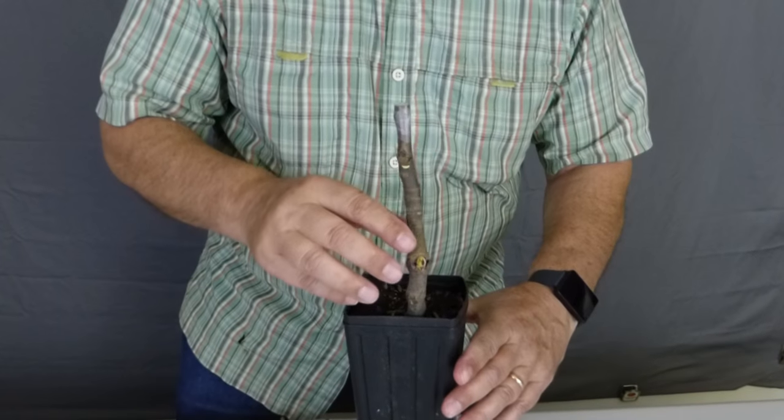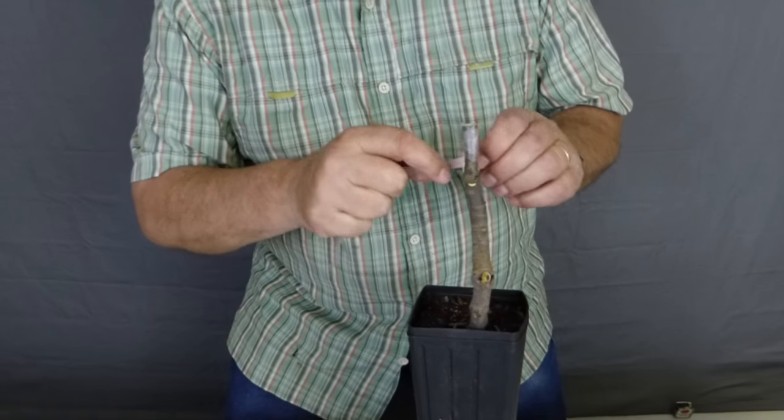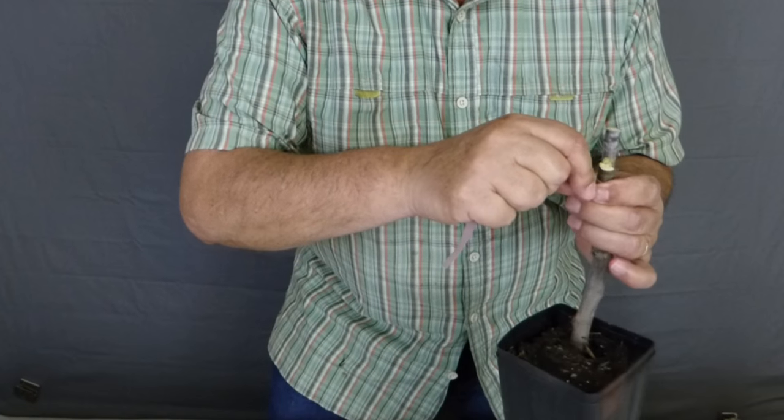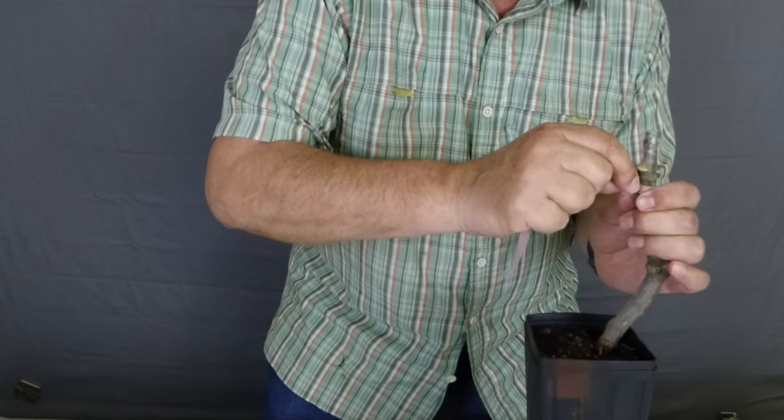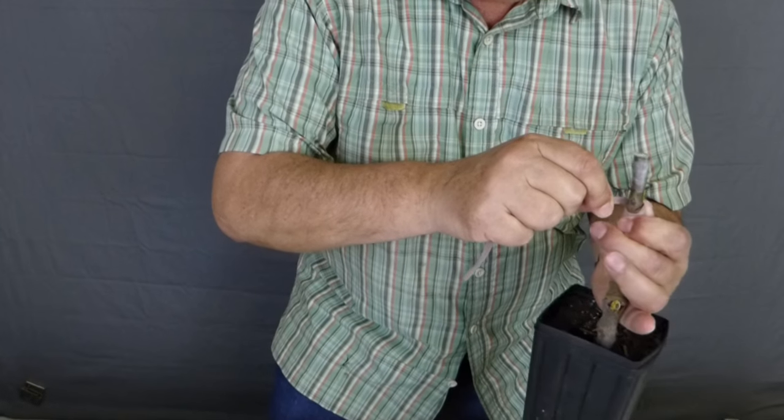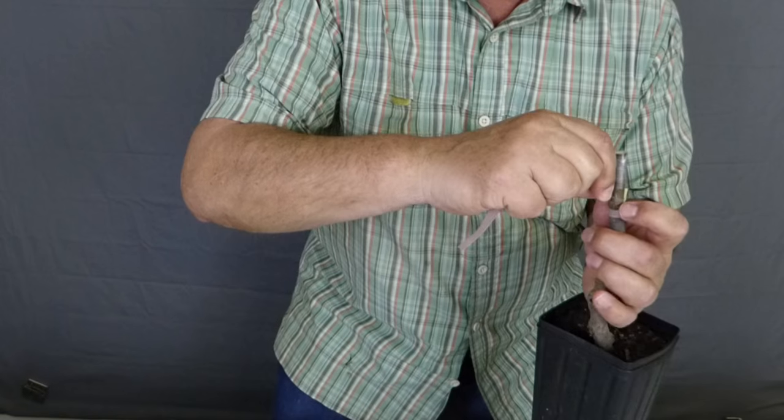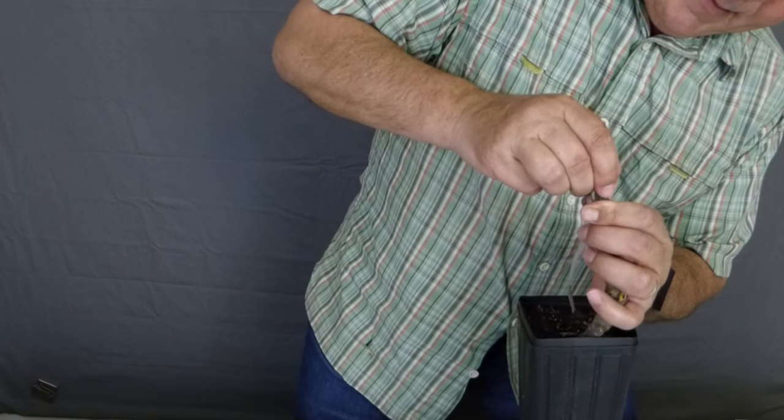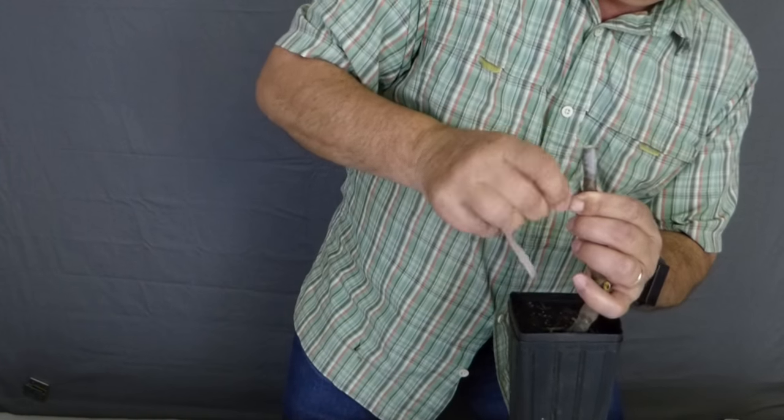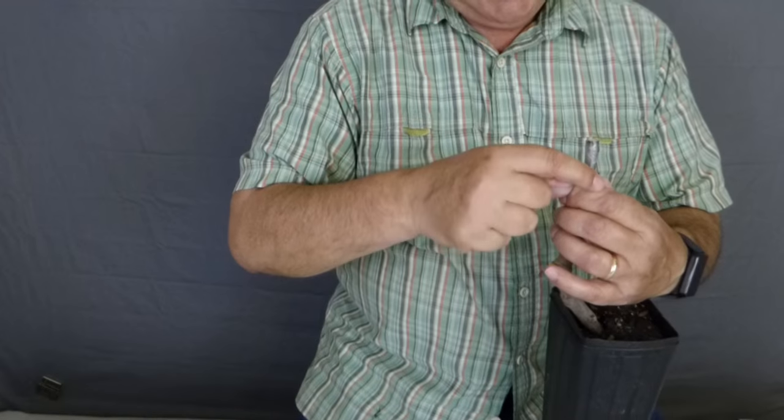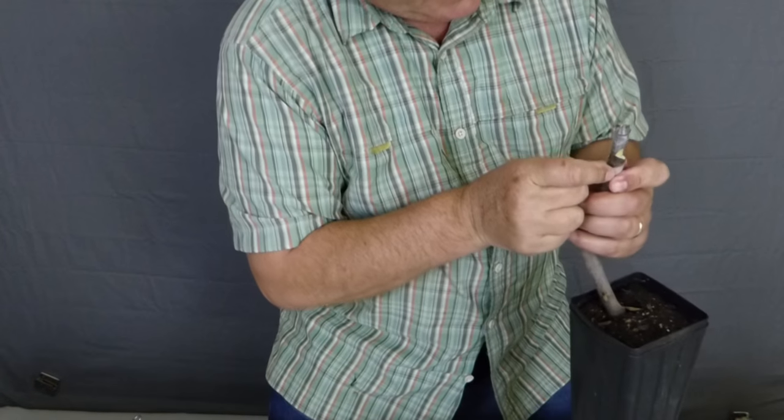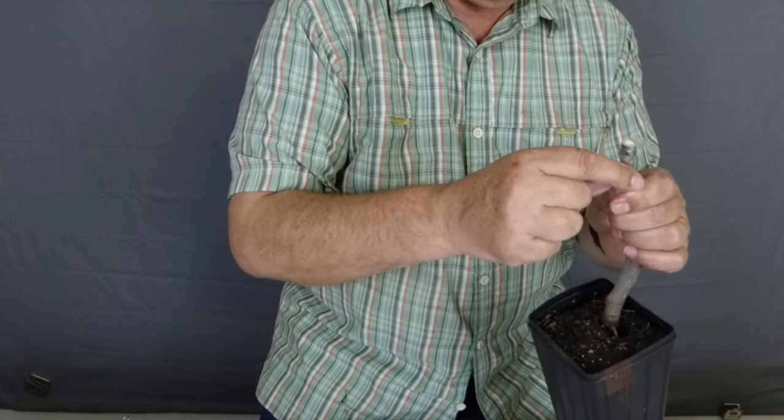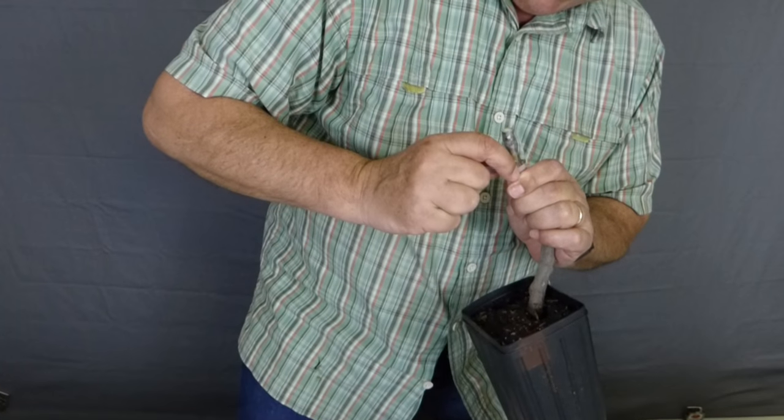If we have long straight scions, it makes it a lot easier but I'm working with material that I have and trying to make the best of what I have. I've moved it out of the way. Push it down a little bit harder. Again working with a small area, trying not to cover the bud with rubber band. Just double check again.